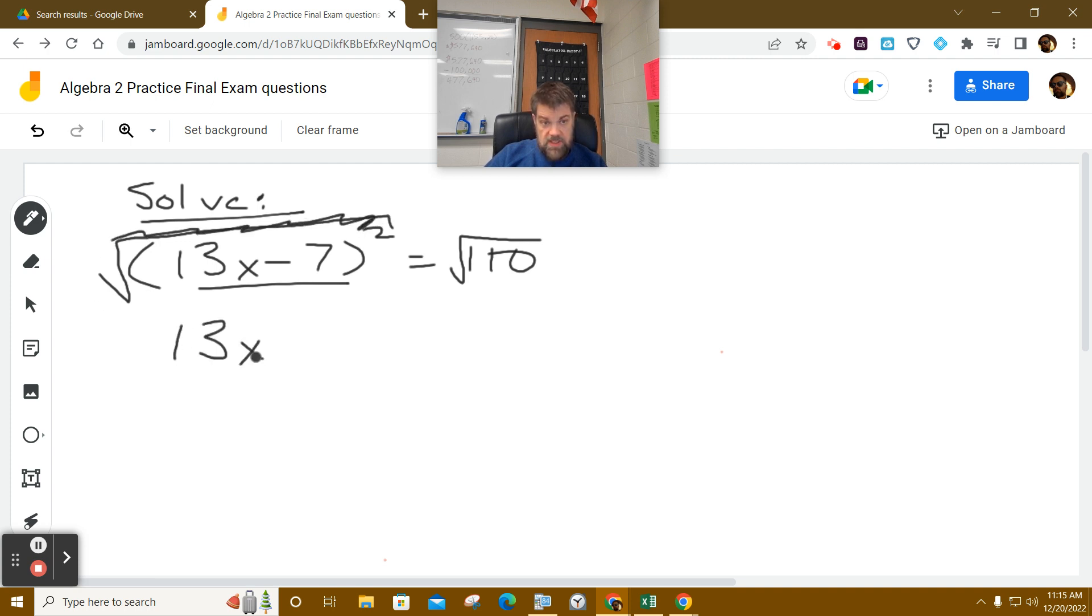And I'm just left with 13x minus 7 equals. And remember, whenever we take the square root, it's plus or minus. So, I'm going to say plus or minus the square root of 110.